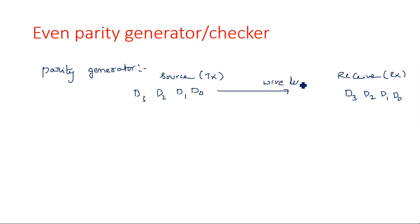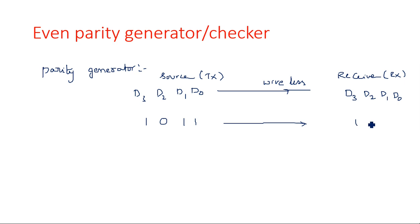Generally for digital communication, in our current situation we are using a wireless medium. In this wireless medium, in most cases the data may have a chance to get interrupted. That means the data whatever we have transmitted — for example, 1011 — after passing through kilometers of distance, this may be violated and transmitted as 1010. What is happening here is the last data bit is changing from one to zero. Actually it has to be transmitted as one but it is transmitted as zero because of some error in the transmission line.